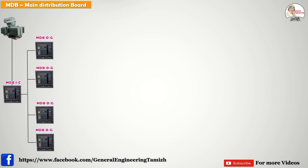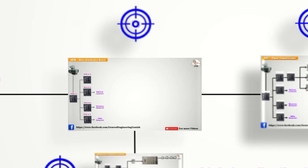From the outgoing feeder we connect loads. The first load is utility equipment. The second is MRN equipment — that means lighting and fire/heating systems. Then high kilowatt equipment is connected. These are all the distributions from the MDB.